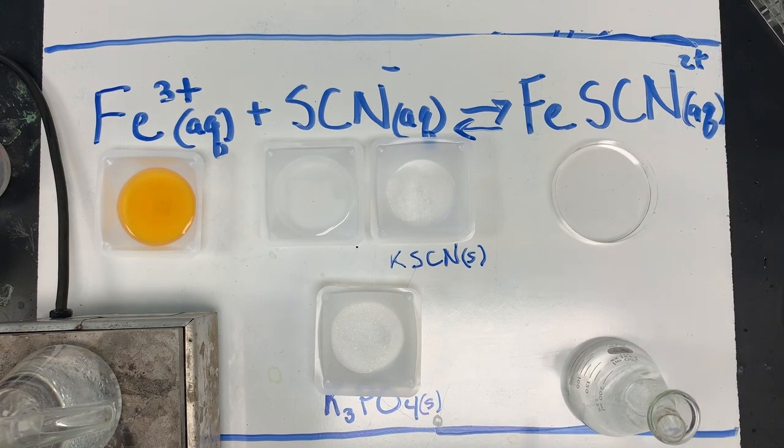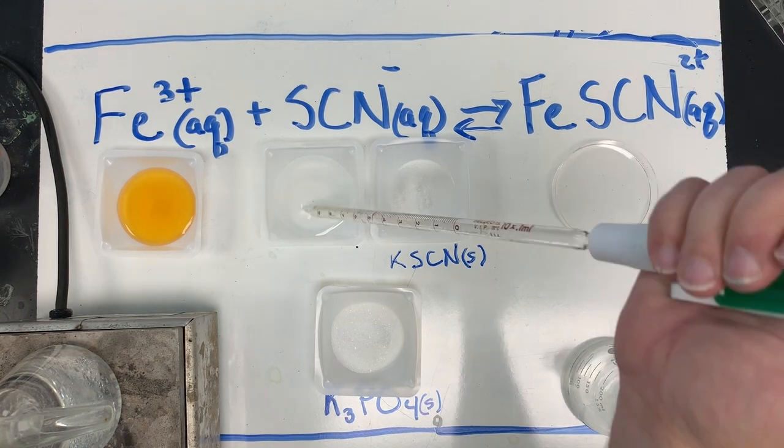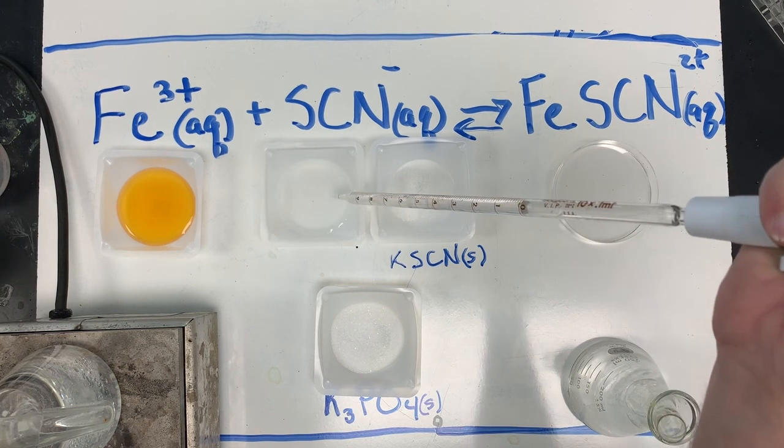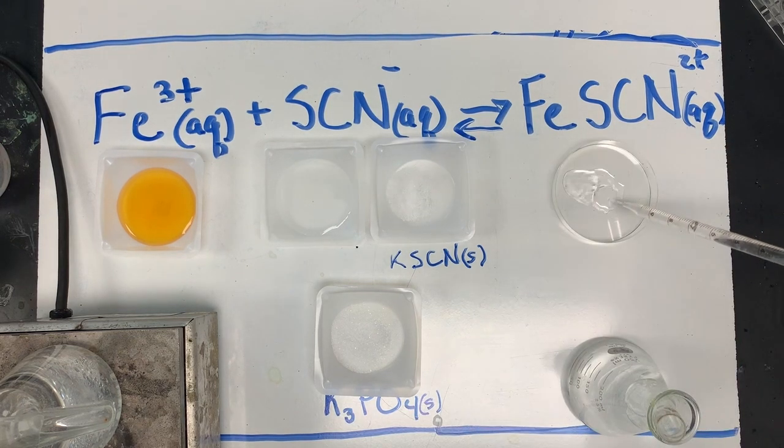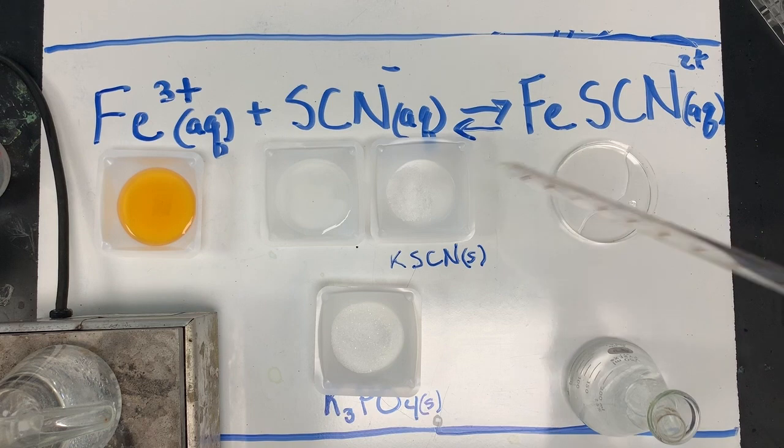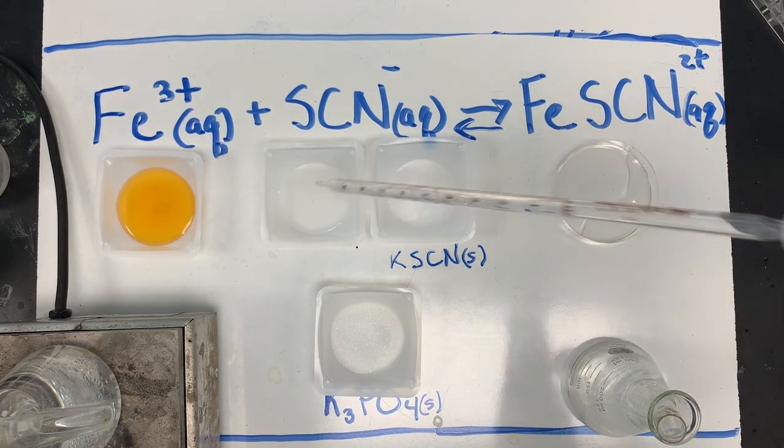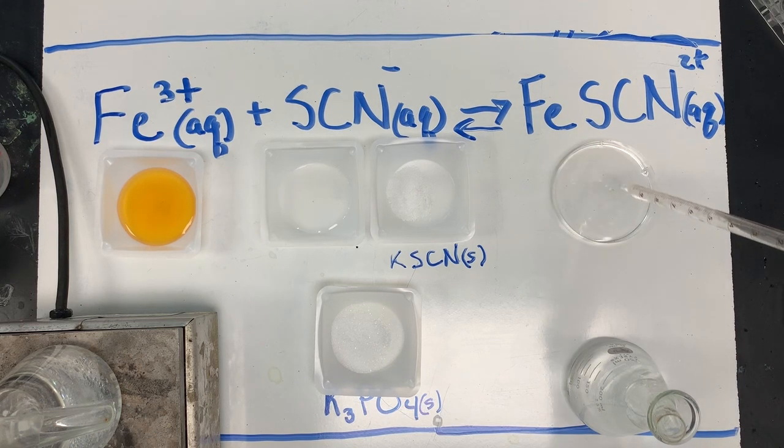So the first thing I need to do is put about 20 milliliters of thiocyanate into my dish. So I'm going to measure that out and put it in the dish. I'll get this was 10 milliliters. Here is another 10 milliliters. And we'll place that in the dish. Now we have our thiocyanate in solution.